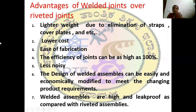Now we are going to discuss about advantages of welded joints over riveted joints. When compared to riveted joints, welded joints are very lighter in weight due to the elimination of straps, cover plates, and so on. Welded joints are also lower in cost — that is the main advantage. Welded joints can be manufactured easily when compared to riveted joints; that is ease of fabrication.